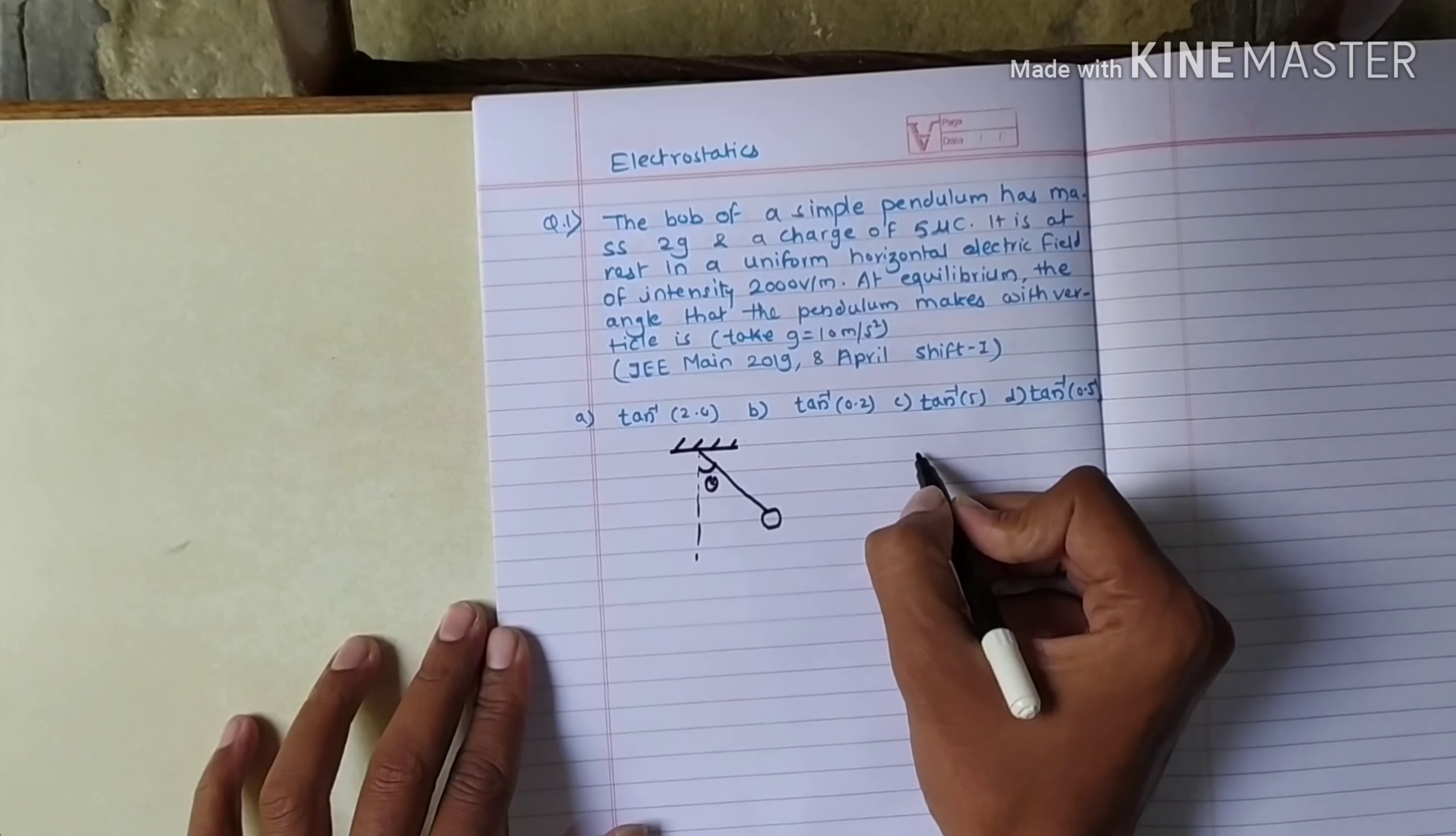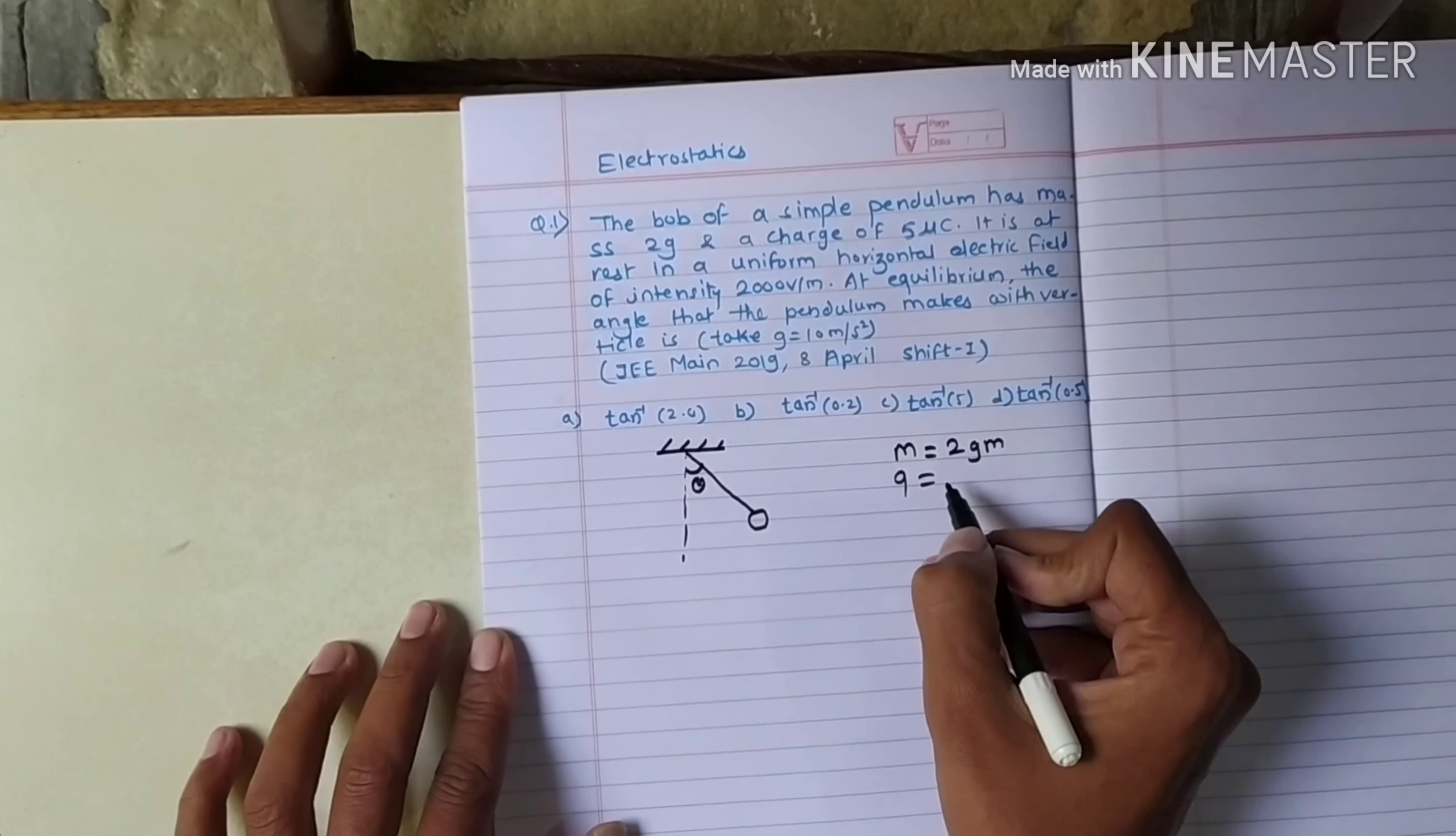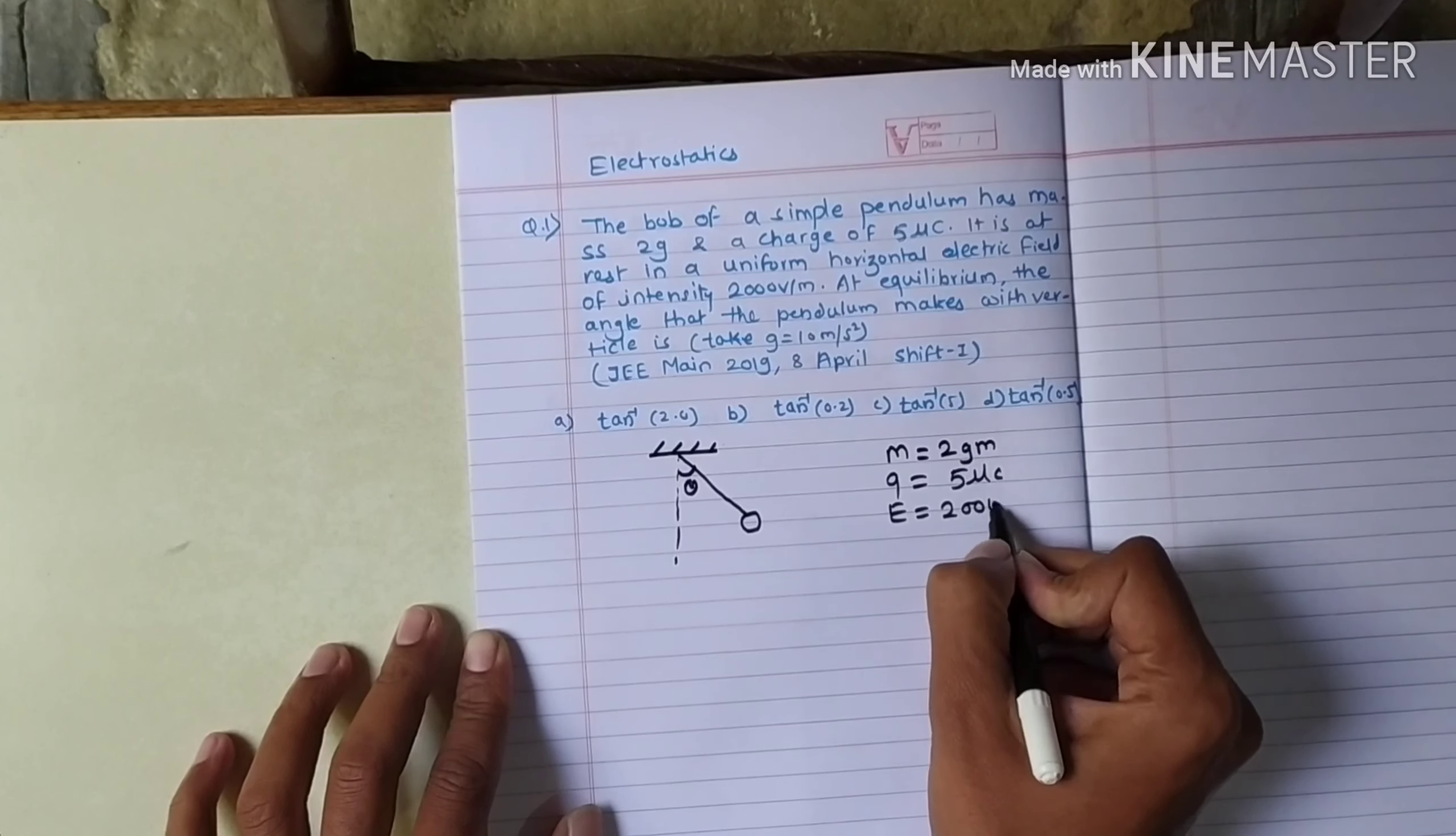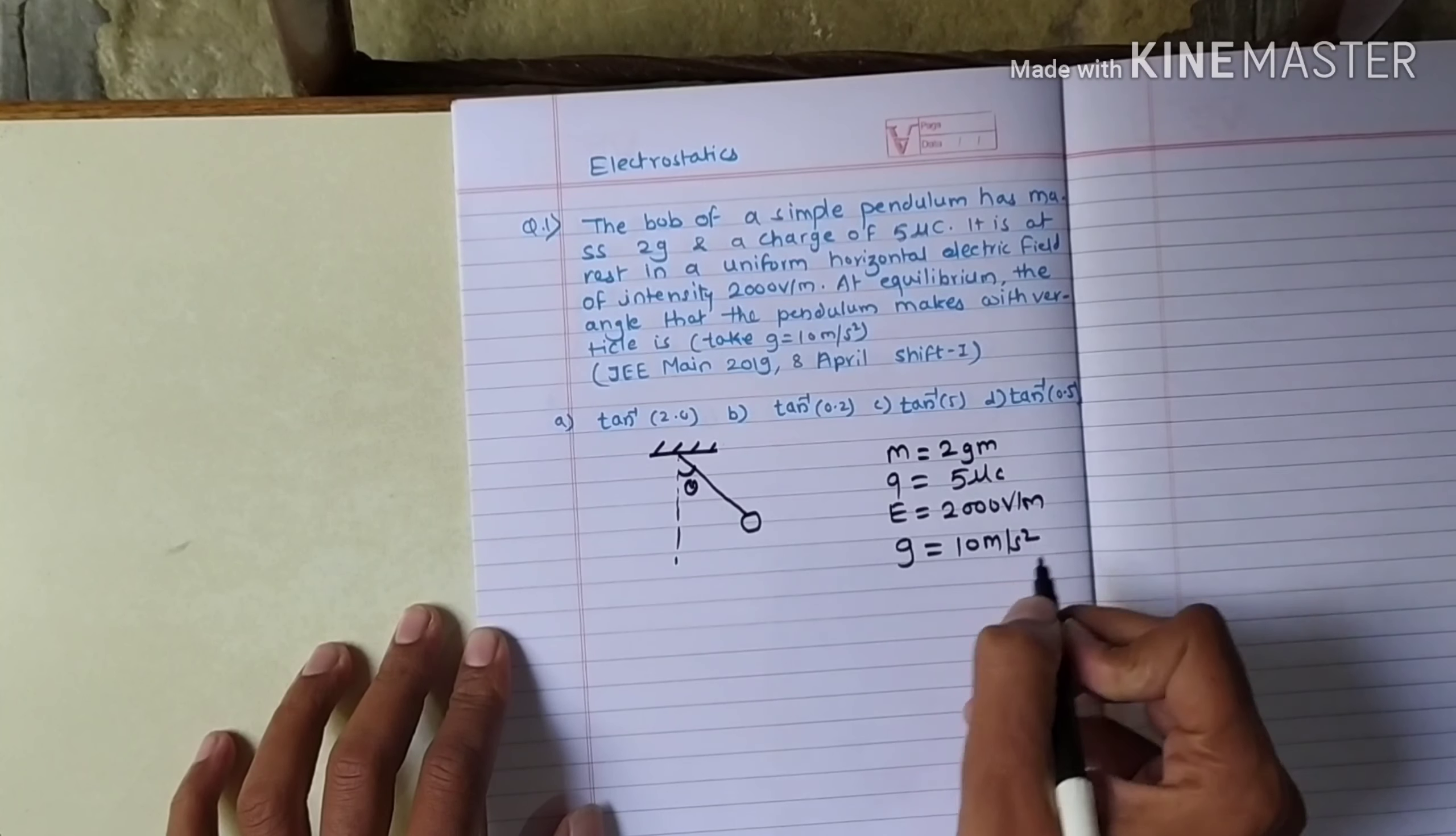First of all, the mass of this pendulum bob is given as 2 grams. The charge is equal to 5 microcoulombs, and the electric field in which it is placed is 2000 volts per meter. And the acceleration due to gravity g is 10 meters per second squared. What we need to find out is theta.